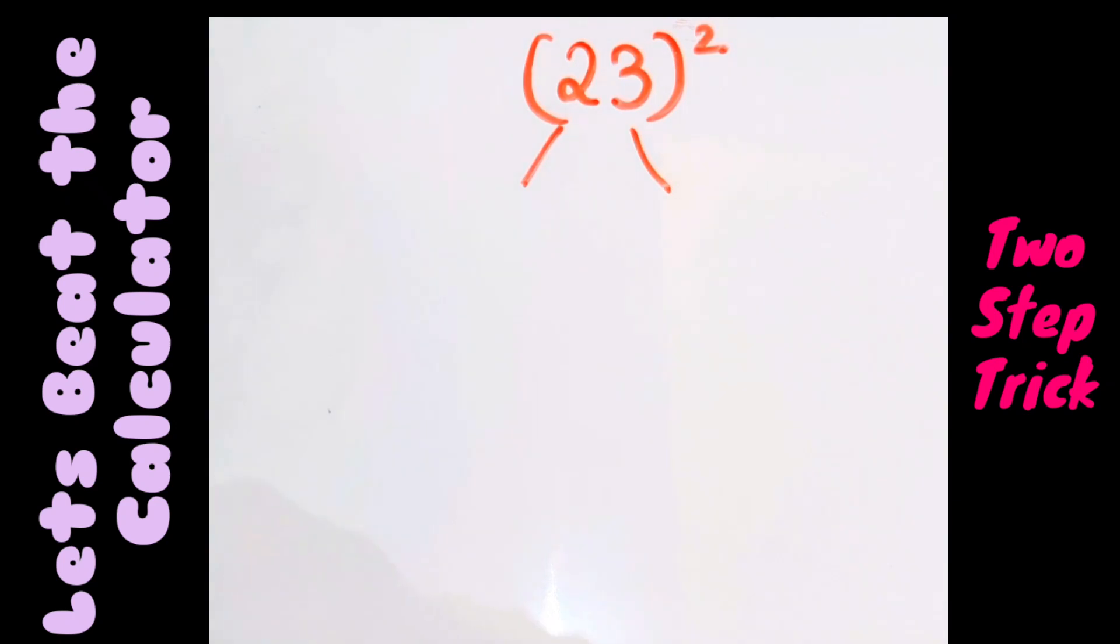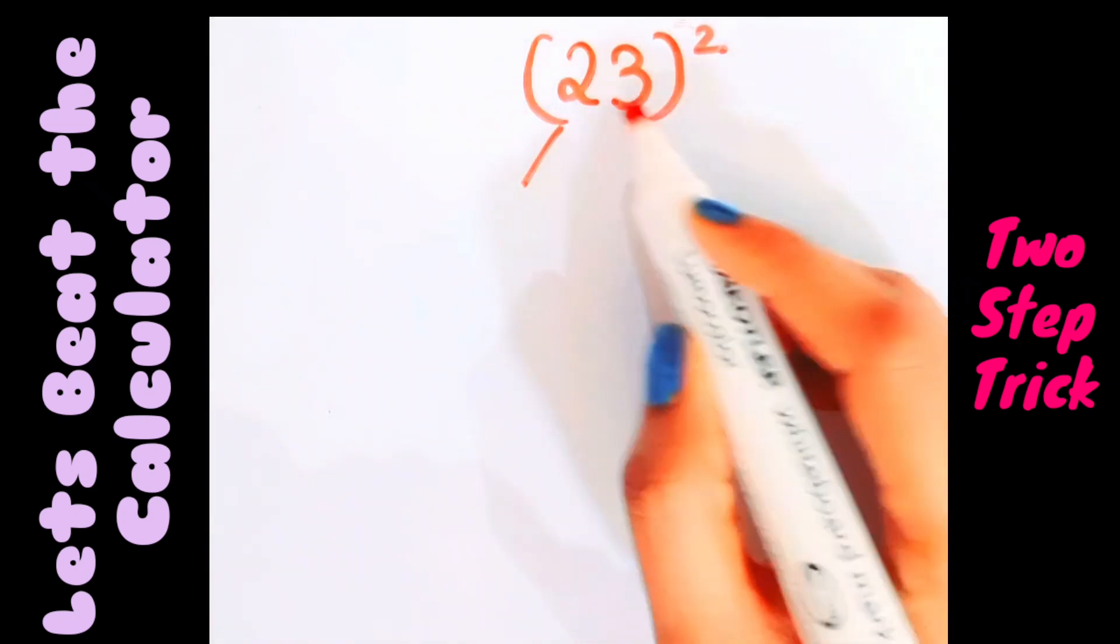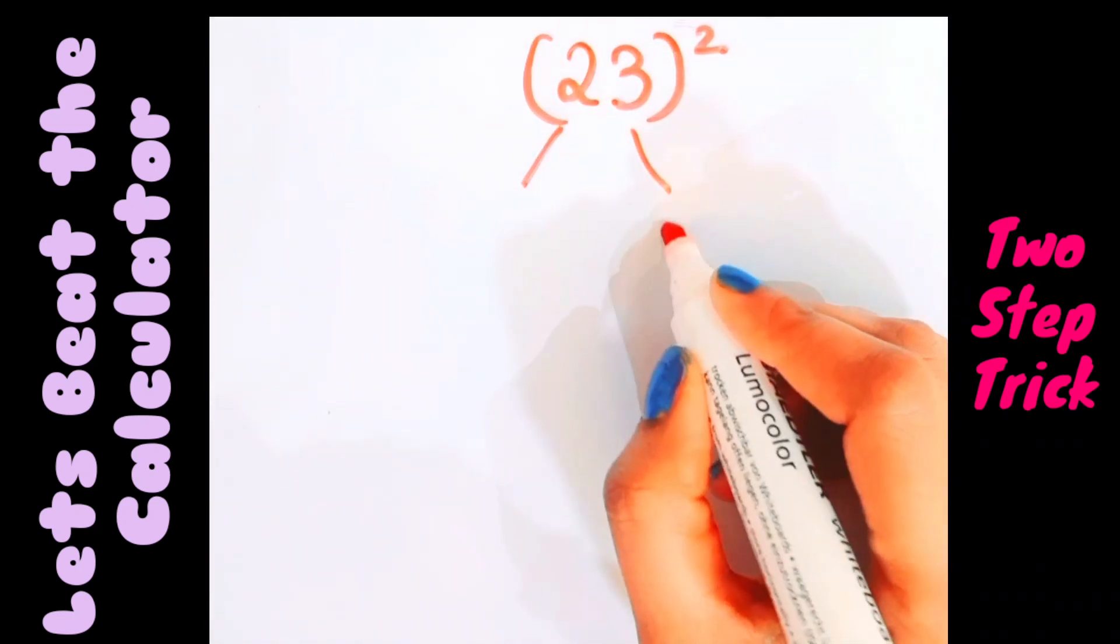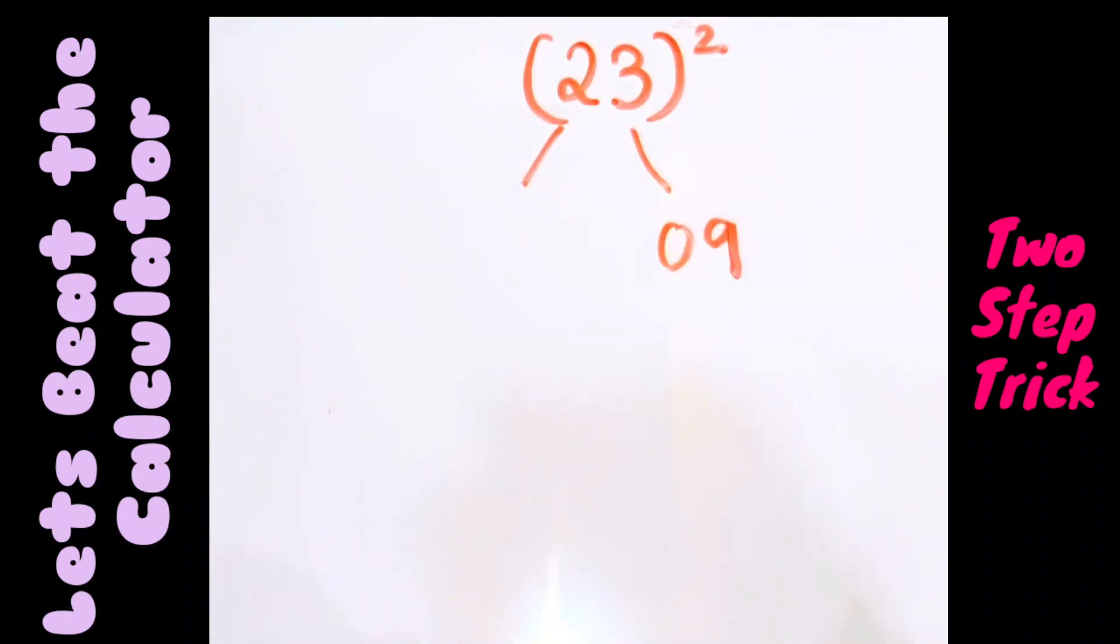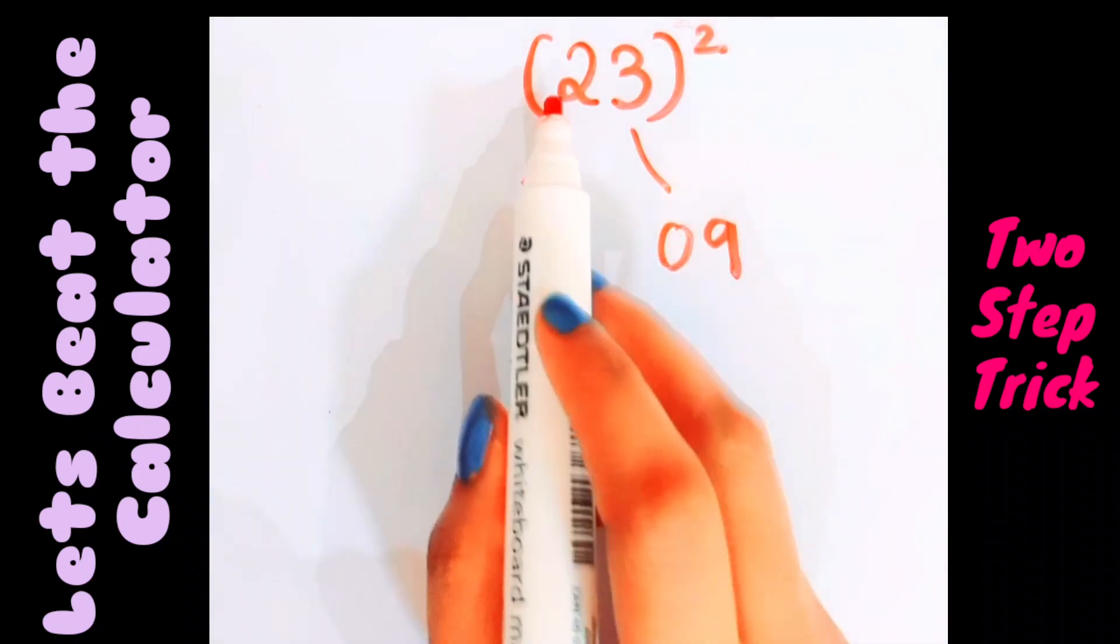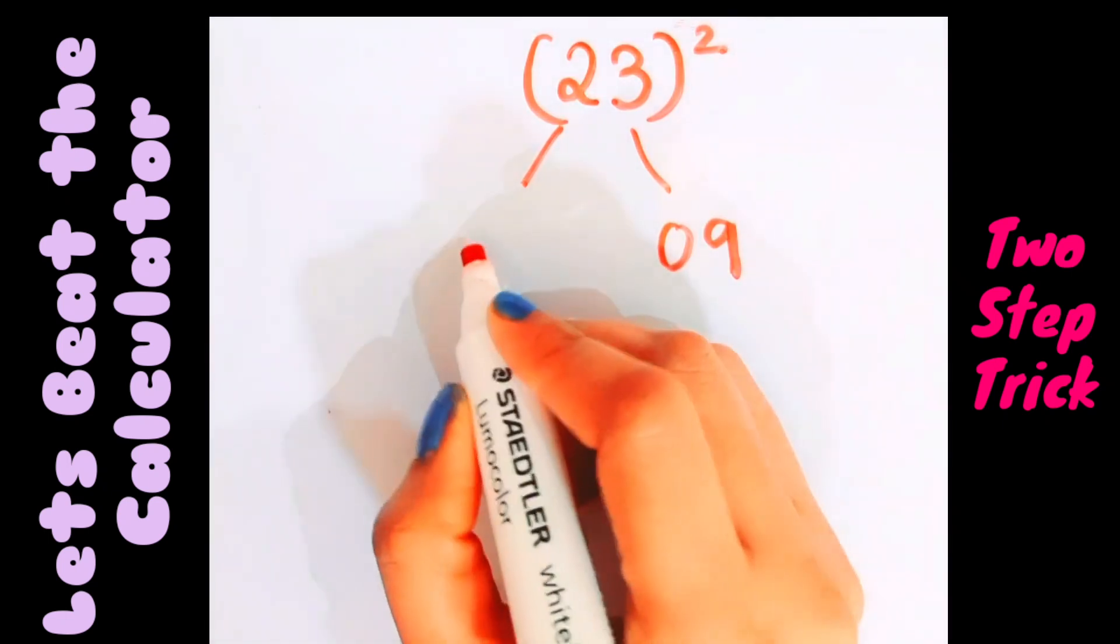Remember, we are finding the square of two-digit numbers, so whatever we are writing we have to write as two-digit numbers. So 3, what is the square of 3? 9. But I said we have to write it as a two-digit number, so 09. Next, what is the square of 2? Correct, 4, so we write it as 04.